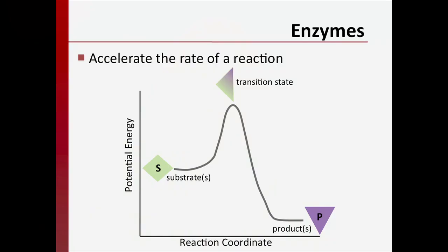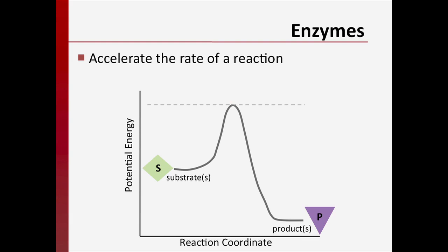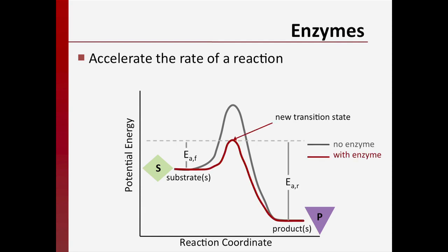How do enzymes work? If we look at a reaction coordinate, the transition state represents a chemical species intermediate between the reactant — or the substrate in this case — and the product. The potential energy difference between the transition state and the reactants is the activation energy required for the forward reaction, and the difference between the transition state and the products is the activation energy for the reverse reaction. Only reactants with the energy to overcome the activation energy barrier will form the products. Like synthetic catalysts, enzymes accelerate the rates of reactions by stabilizing the transition state, lowering its potential energy, and providing a new pathway by which the reaction can occur. This new reaction pathway has a lower activation energy than the uncatalyzed path.